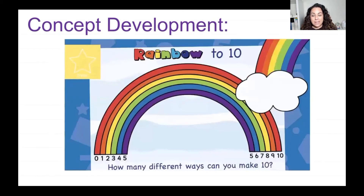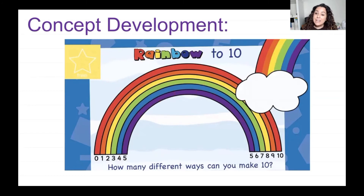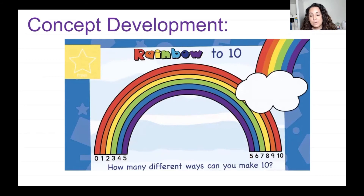Remember your rainbow facts — that's going to help you with making groups of 10. Your rainbow facts are: zero matches to 10, one to nine, two plus eight, three plus seven, four plus six, and five plus five. It also works backwards: five plus five, six plus four, and so on. Whenever you draw a rainbow, draw those numbers underneath them and practice your 10s facts.